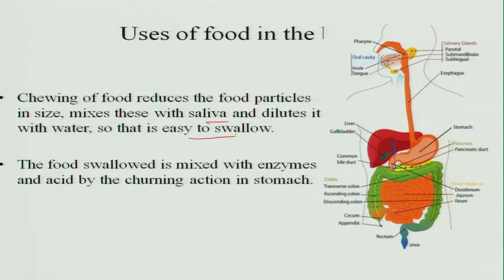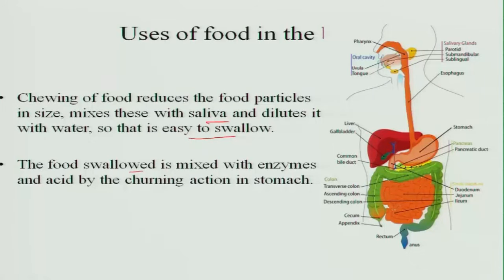Chewing reduces food particles into smaller size and mixes them with saliva in the mouth. We produce about 1 to 1.5 liters of saliva per day, which dilutes and moistens the food, making it easy to swallow. The food is then mixed with enzymes and acid, and churning action takes place. It has to go through a very small tube — the esophagus — so the food must become like a slurry before reaching the stomach.